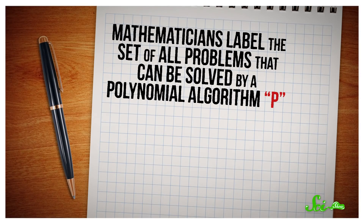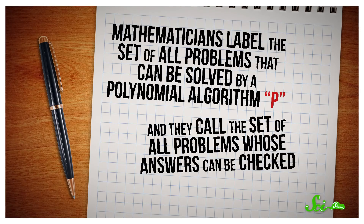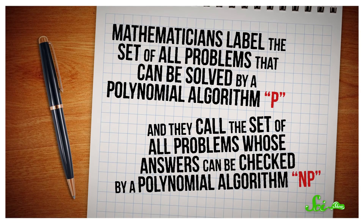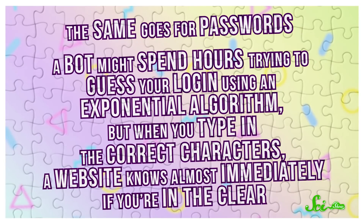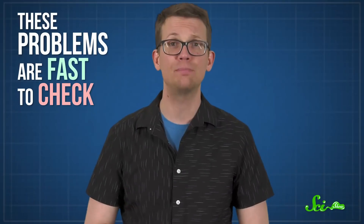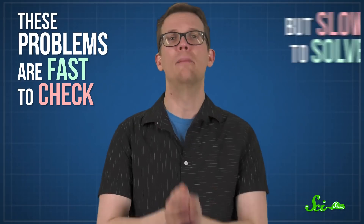Which brings us back to P versus NP. Mathematicians label the set of all problems that can be solved by a polynomial algorithm P. And they call the set of all problems whose answers can be checked by a polynomial algorithm NP. The distinction there is a little subtle. NP consists of all the stuff you might spend hours slaving over, only to have someone glance at your answer and say, yeah, that's right. An example: jigsaw puzzles. It might take you days to put together a 10,000-piece puzzle, but it will only take a very brief amount of time to know whether you did it right. The same goes for passwords — a bot might spend hours trying to guess your login, but when you type in the correct characters, a website knows almost immediately if you're in the clear. Basically, these problems are ones that are fast to check but slow to solve.